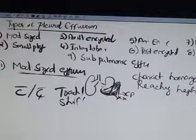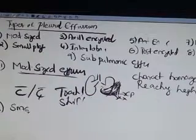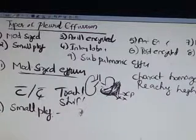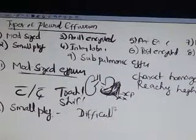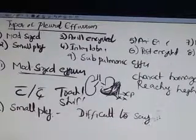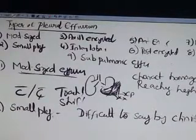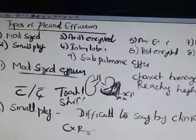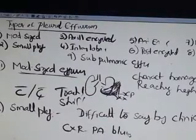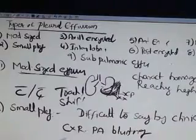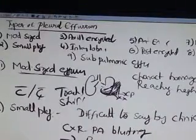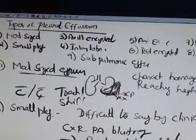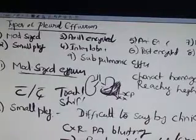Coming to the next thing, small pleural effusion. Here it is difficult to see by clinical examination. What you can see is CXR PA only blending. Best will be a lateral view or USG chest.